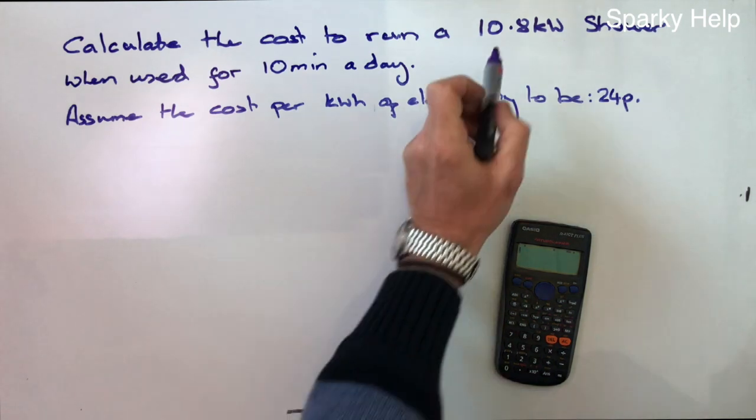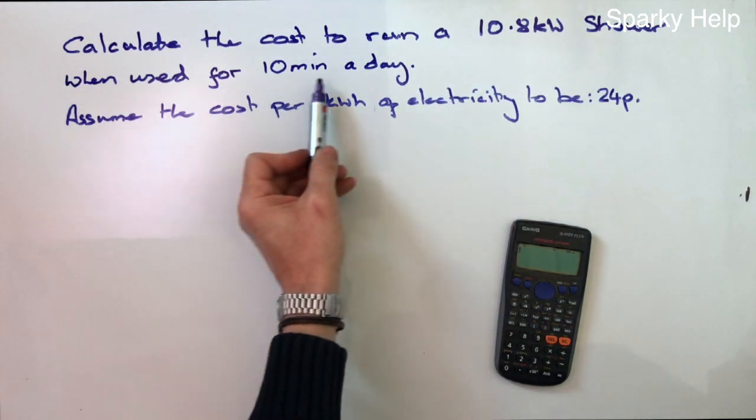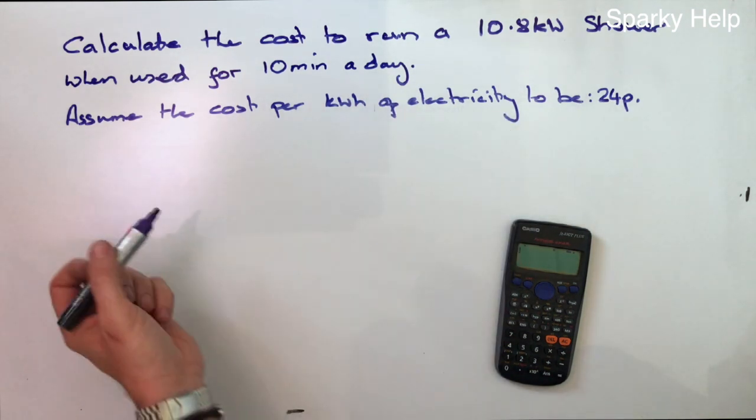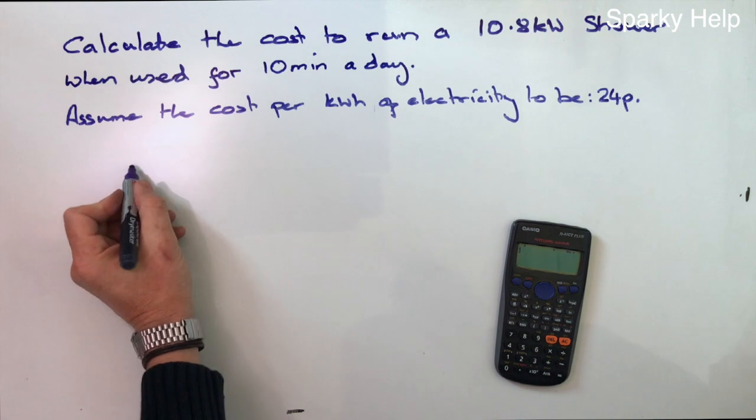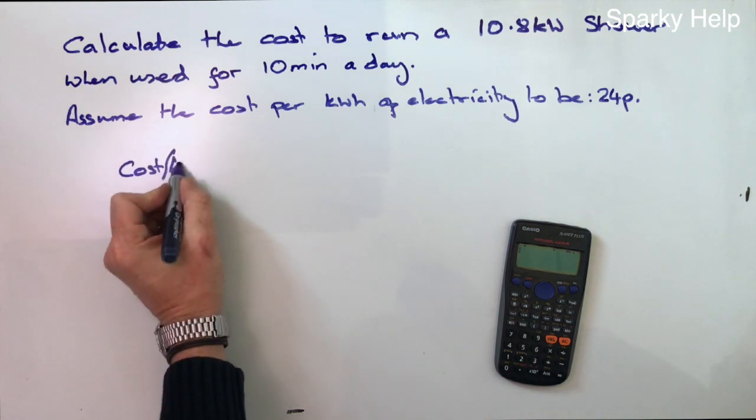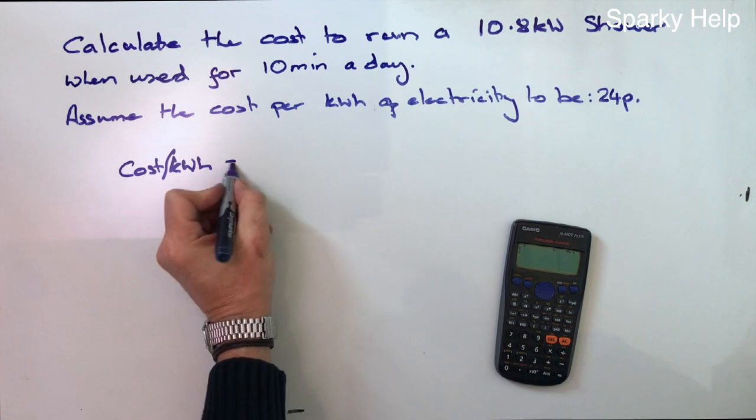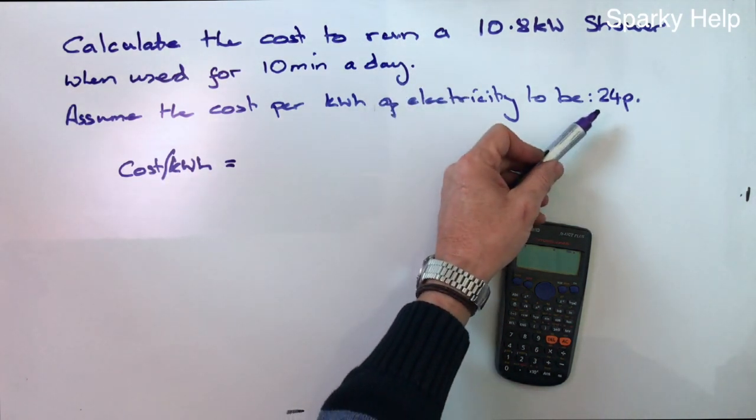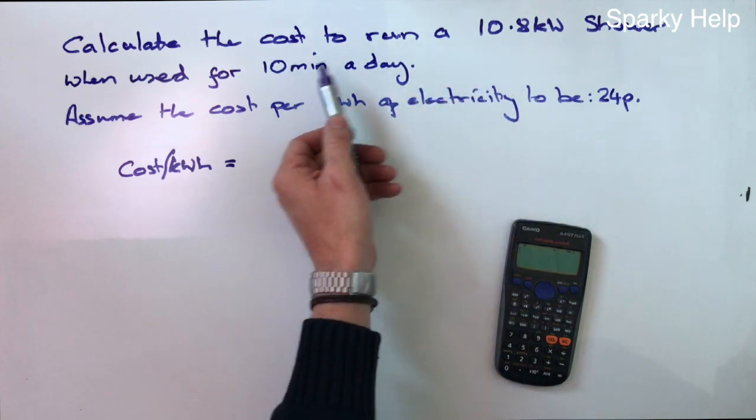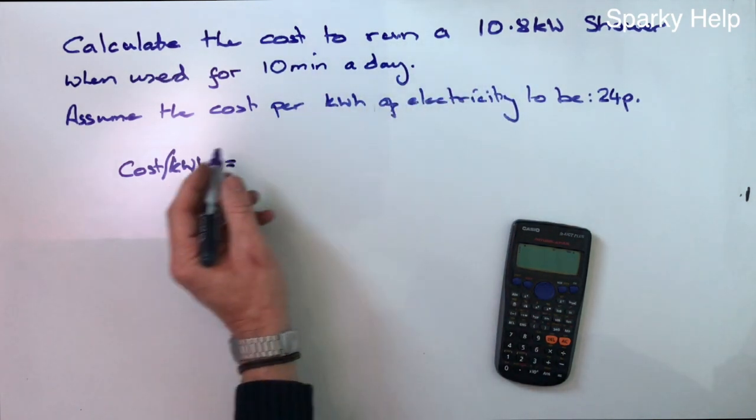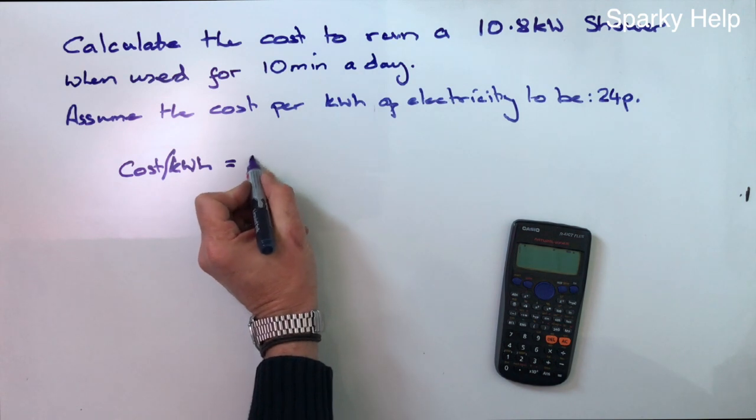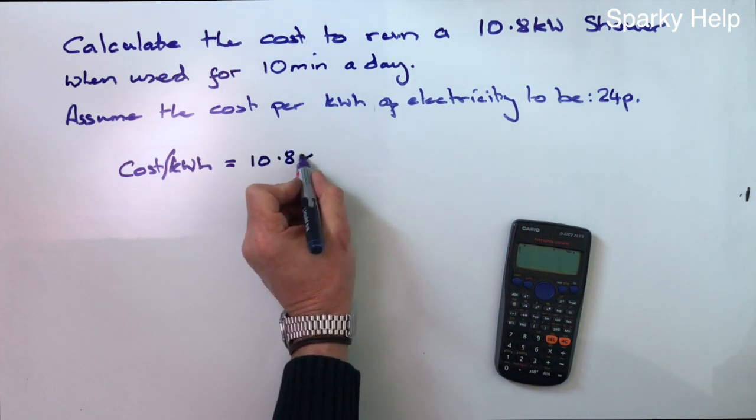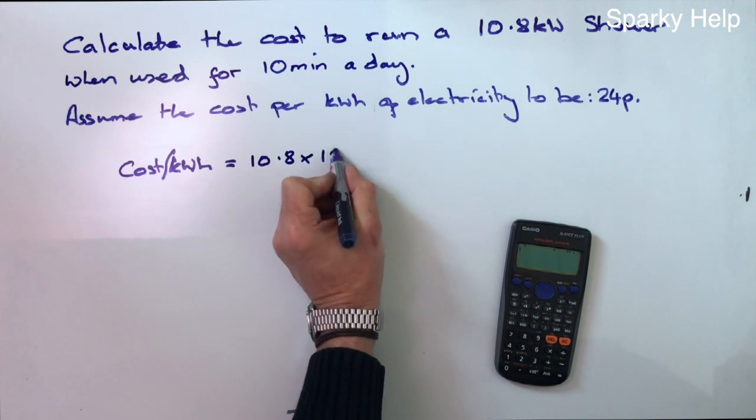Calculate the cost to run a 10.8 kilowatt shower when used for 10 minutes a day. Assume the cost per kilowatt hour of electricity to be 24p. So to work out the cost, we need to work out how many kilowatt hours we're using. Therefore, 10.8 kilowatts times 10 minutes.